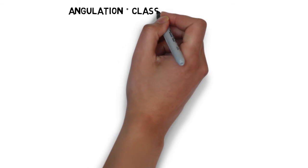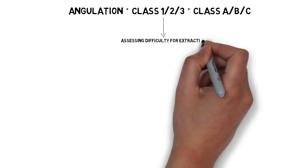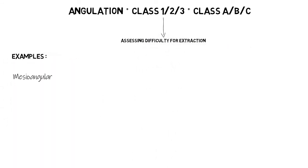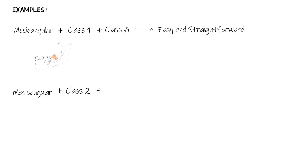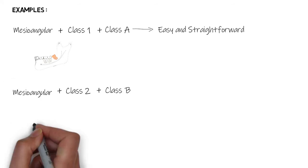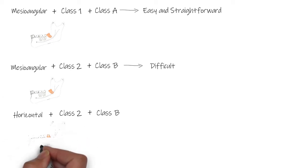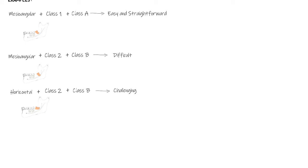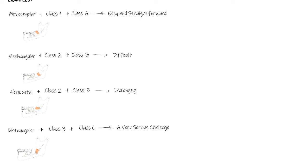These three classes can be used together to describe the degree of impaction and determine extraction difficulty. For example, a mesoangular impaction with Class 1 ramus and Class A depth is very easy to extract. As the ramus relationship changes to Class 2 and depth to Class B, difficulty increases several folds. A horizontal impaction with Class 2 ramus and Class B depth provides a more serious challenge. The most difficult is a distoangular impaction with Class 3 ramus relationship at Class C depth — a serious challenge even for the most experienced specialists.